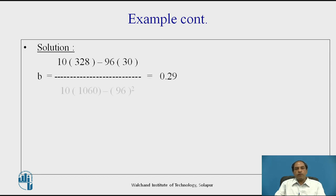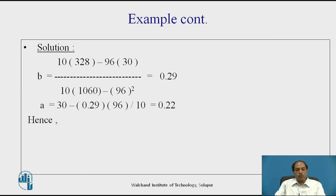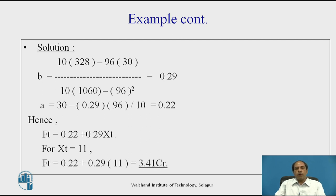The solution: b = [10 × 328 − 96 × 30] / [10 × 1060 − 90²] = 0.29, and a = 0.22. Hence the forecast equation is ft = 0.22 + 0.29·xt. Substituting xt = 11, the forecast for Q11 is 3.41 crores. This demonstrates the power of regression analysis — given the data, we can estimate future values. Similarly, putting xt = 12 or xt = 15 forecasts Q12 or further quarters. Thank you.